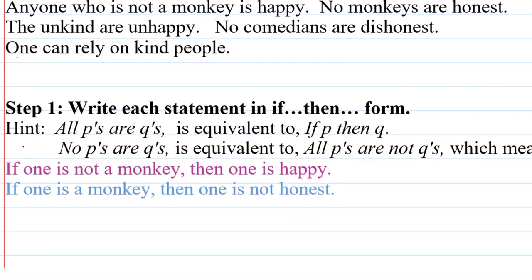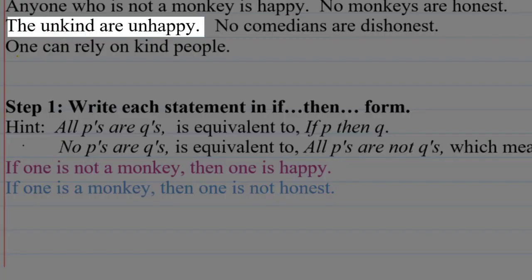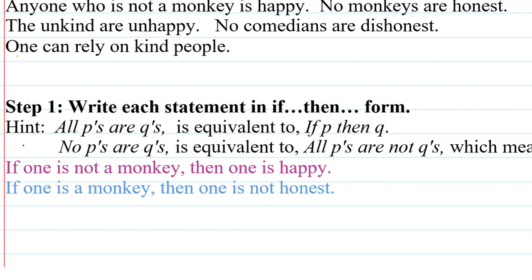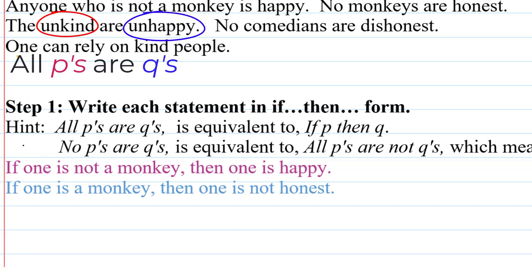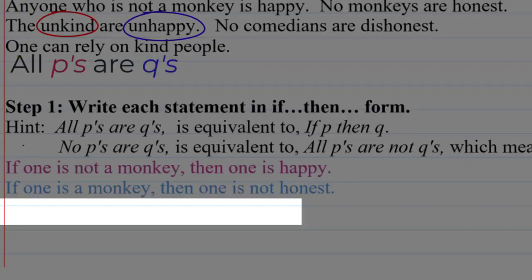The third statement, 'the unkind are unhappy,' could be thought of as 'all those who are unkind are unhappy.' That's an 'all P's are Q's' where P is the characteristic of being unkind and Q is the characteristic of being unhappy. So in if-then form: if one is unkind, then one is unhappy.